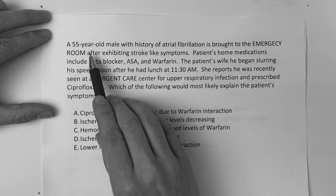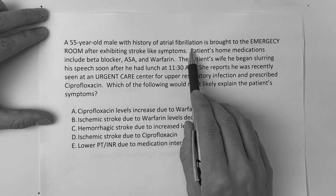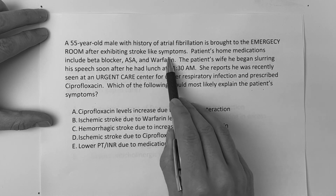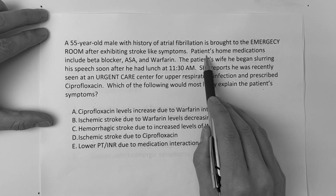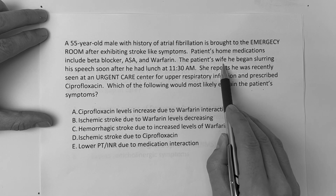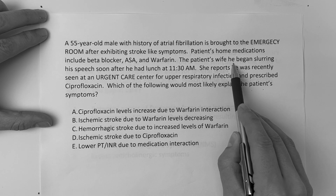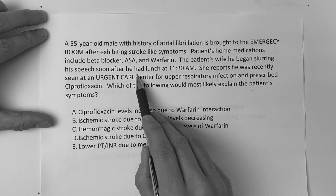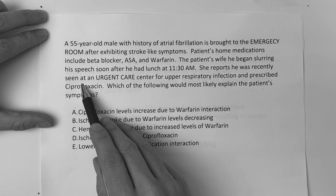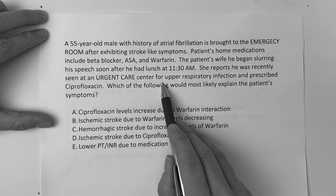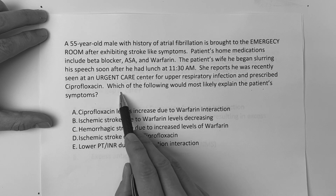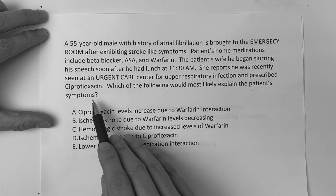A 55-year-old male with history of atrial fibrillation is brought to the emergency room after exhibiting stroke-like symptoms. Patient's home medications include beta blocker, aspirin, and warfarin. The patient's wife states he began slurring his speech soon after he had lunch at 11:30 a.m. She reports he was recently seen at an urgent care center for upper respiratory infection and prescribed ciprofloxacin. Which of the following most likely explains the patient's symptoms?